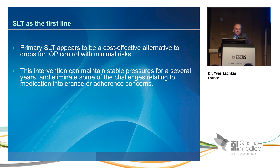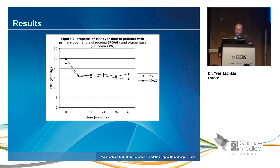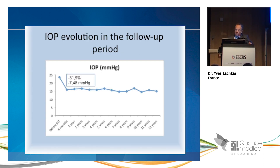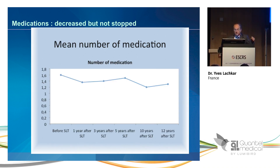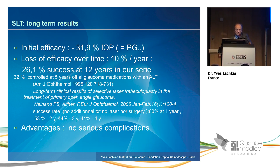We should note this is only three years of data. I performed the first SLT in France 20 years ago, and we published 12-year results showing that treating 360 degrees gives very good results in primary open-angle glaucoma and also inflammatory glaucoma. Over 12 years the decrease in intraocular pressure was 31.9%, with a decreased number of medications. The main problem was loss to follow-up, as patients seem to think they will be cured with SLT — like patients wanting laser to remove their myopia. Initial efficacy was good, but the loss of efficacy over time was about 10% per year, with no serious complications.